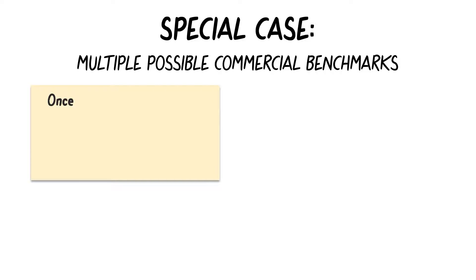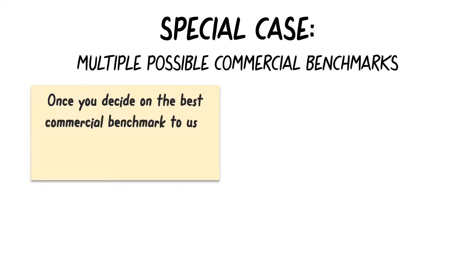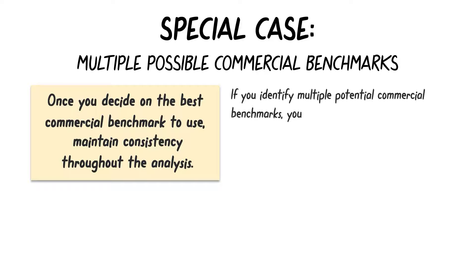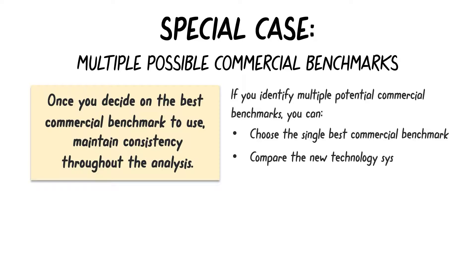You may have noticed that some technologies have multiple possible commercial benchmarks. However, once you decide on the best commercial benchmark to use, it is important to maintain consistency throughout the analysis. If you identify multiple potential commercial benchmarks that would make useful comparisons, you have a few options. One option is to choose the single best commercial benchmark. Your other option is to select multiple benchmarks and compare the new technology systematically to each in turn. If you choose this option, maintain consistency by carrying all chosen benchmarks through all analysis steps — avoid switching between them.